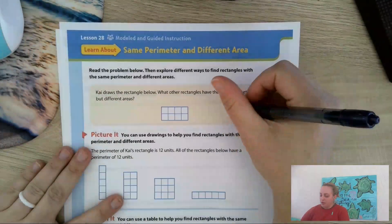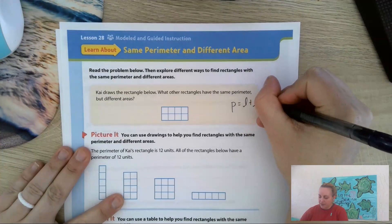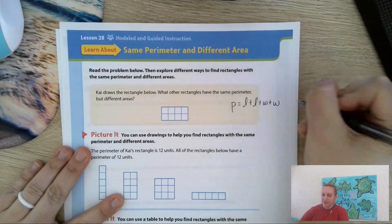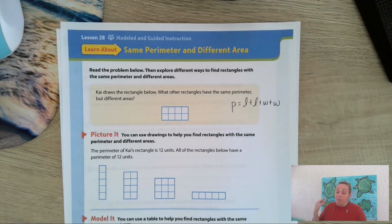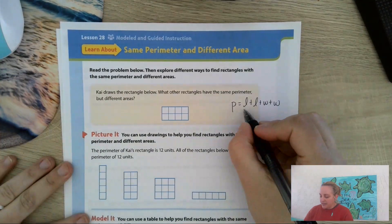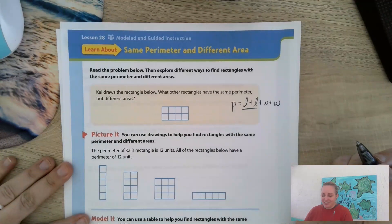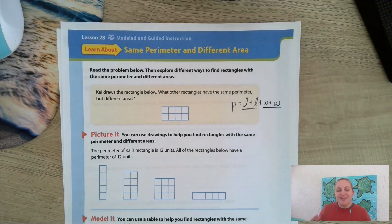Remember, the perimeter is equal to the length plus the length plus the width plus the width. So now we're thinking about what are different ways we can add to get a certain number, versus multiplying to get a certain number. It's also incredibly important that we remember with rectangles both of the lengths are the same and both of the widths are the same. So this one's a little bit trickier because of that, but you can still do it.